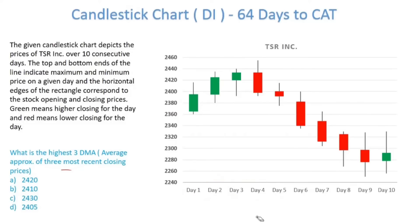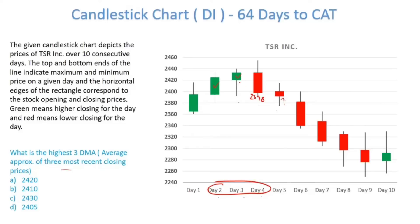Comparing days 1-2-3 versus days 2-3-4: days 2 and 3 are common to both. Day 1 closing is around 2390 to 2395, while day 4 closing is closer to 2398 — which is greater than day 1. So between the two windows, days 2-3-4 is better. Comparing days 2-3-4 with days 3-4-5, the closing prices further reduce in the later window. Hence, days 2-3-4 will give the best 3-day moving average.